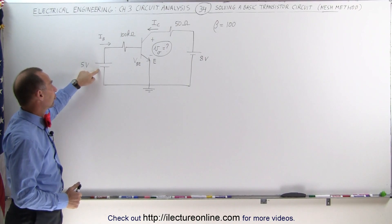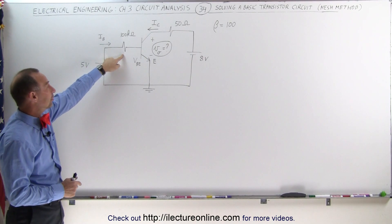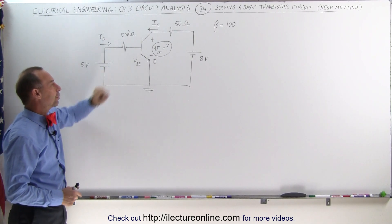We have a 5 volt voltage source driving current to the base. We have a 100k ohm resistor. The voltage drop between the base and the emitter should be about 0.7 volts.